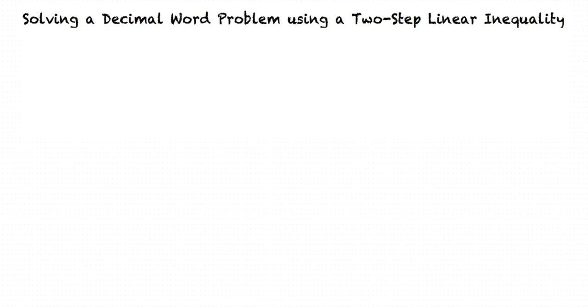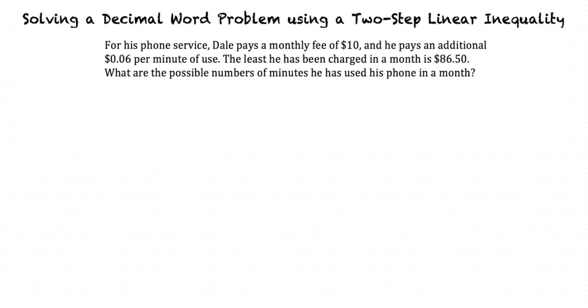Let's take an example problem. The problem says: For his phone service, Dale pays a monthly fee of $10, and he pays an additional $0.06 per minute of use. The least he has been charged in a month is $86.50. What are the possible numbers of minutes he has used his phone in a month?